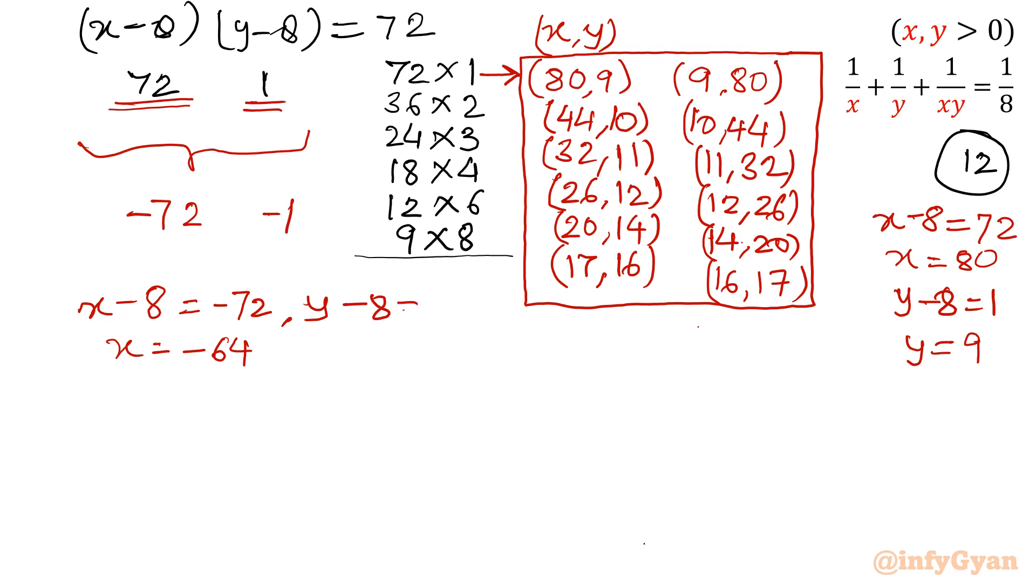See, x is coming out negative. Now if I am putting y-8 = -1, y will be 7. So this set is (-64,7), which is incorrect. So because of x having -64 value, x is having negative value, so that cannot be accepted.